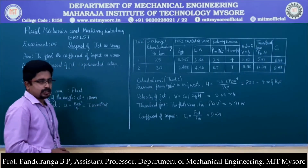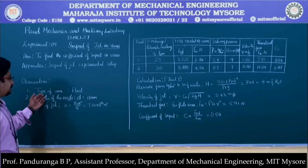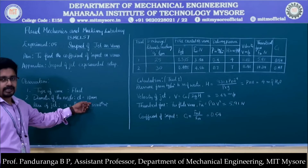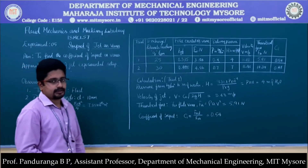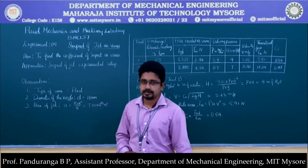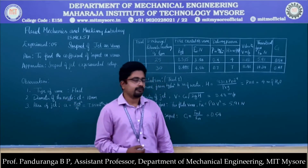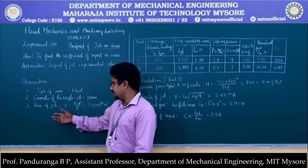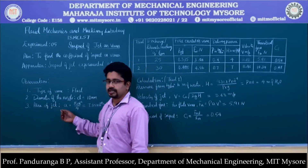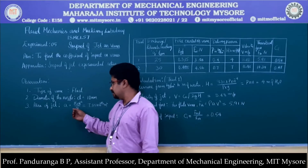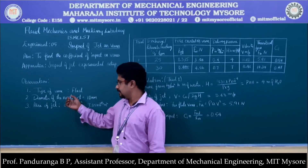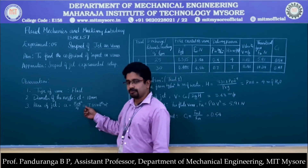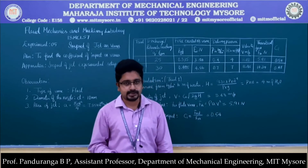We have conducted the experiment. The observations are: we have used a flat vane, and the diameter of the nozzle is 10 millimeters. In our experimental setup, we can alter the type of vane, and depending on the type of vane, the equation for the theoretical force will also change. We need to find out the area of the jet, which is the cross-sectional area of the nozzle — that is 7.85 × 10⁻⁵ meters squared.